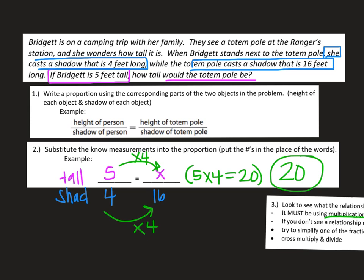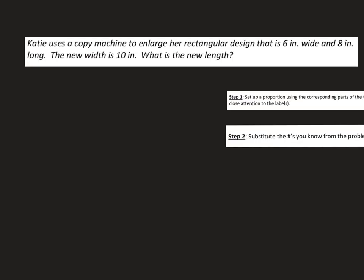Another thing you could do if you're a picture person and you wanted to do this, you could draw this is the girl. And you could have this labeled. She's 5 foot tall and her shadow is 4. And then you could have the totem pole and also just do the same measurements. We only know that the shadow is 16 and we don't know the height. So if you like pictures, you could just draw the lines representing the height and the shadow.